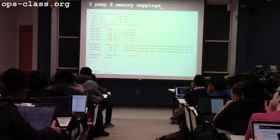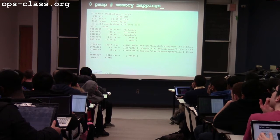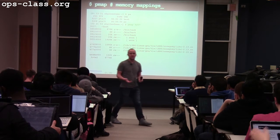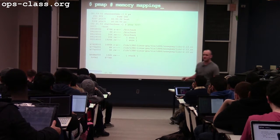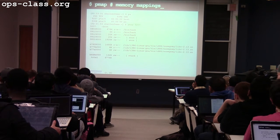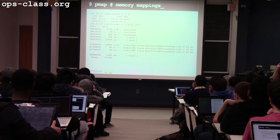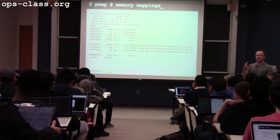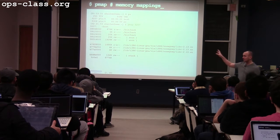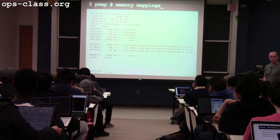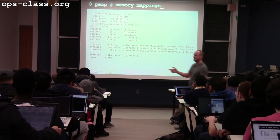Last time, we were about halfway through the process of inspecting how a particular program uses system resources using a set of cool command line utilities. The last thing we did was we were using PMAP, which shows us the memory mappings of a process. We looked at Bash and saw what it has in memory.